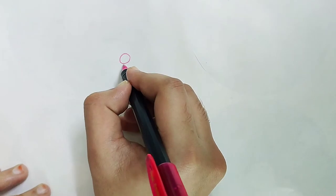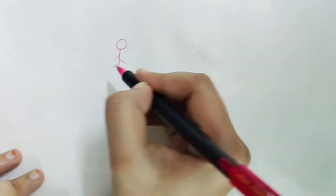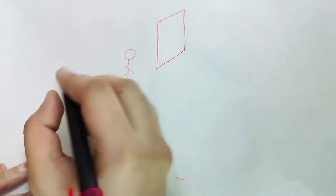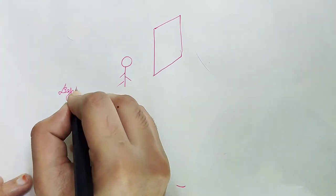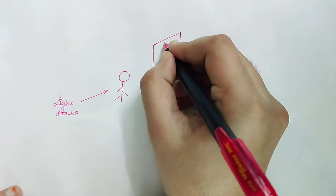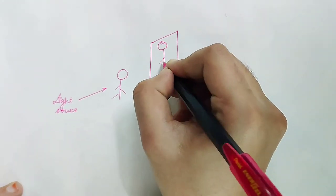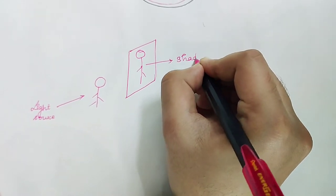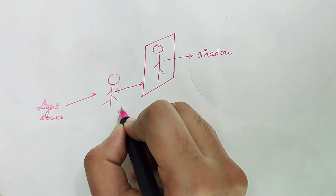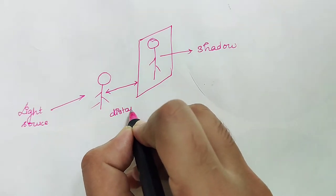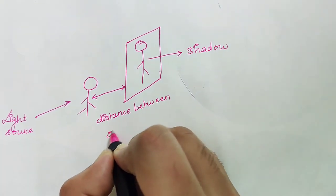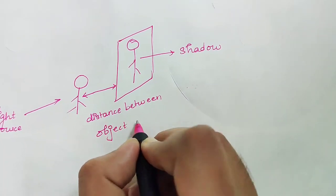Consider this to be the object and this to be the screen. When we illuminate a light source from a distance, we get the shadow of the object on the screen. It is only because of the distance between the object and the screen. The shadow on the screen exists only because of the distance from the object to the screen.